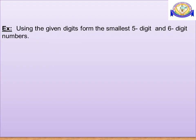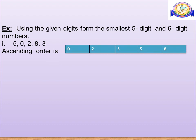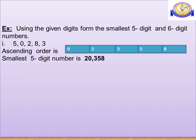If 0 is one of the digits, how to form the smallest 5-digit and 6-digit number? Consider the digits 5, 0, 2, 8, 3. Ascending order is 0, 2, 3, 5, 8. Here, we won't write 0 at the 10,000th place as it would become a 4-digit number. Therefore, the smallest 5-digit number is 20,358.